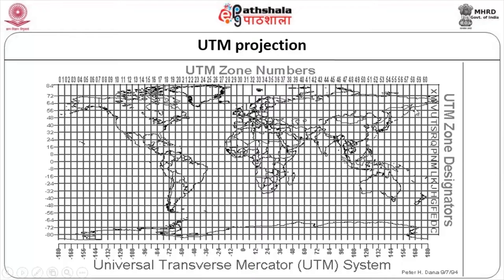You can see the lettering system — for India, zones P, Q, and R are present; in Tamil Nadu it is more north. For central India you would say Q followed by 42, 43, or 44 depending on which part of India you are looking at. Each zone is 6 degrees of longitude wide — at the equator the width between two longitudes is the same, but going closer toward the poles it will vary. All measurements in UTM are in meters, and it follows conformal projection preserving shape.